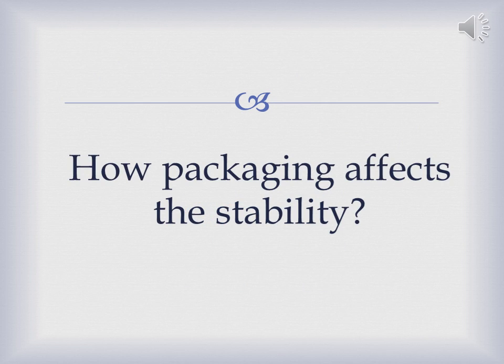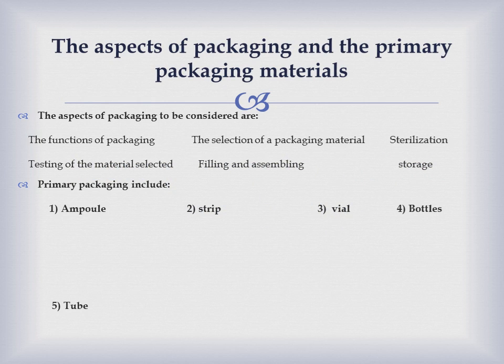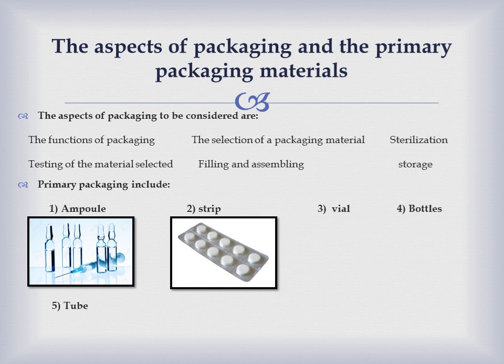How packaging affects stability: concerning primary packaging materials, there are various aspects to consider, like the function of packaging, selection of packaging materials, sterilization, testing of the materials selected, filling, assembling, and storage. Primary packaging materials come in various forms and are made of various materials, like ampoules, strips, vials, bottles, and tubes.